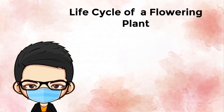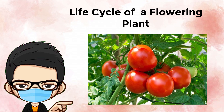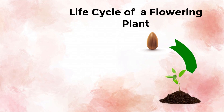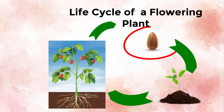Plants also have a life cycle. Plants are classified into flowering and non-flowering plants based on their life cycle. Flowering plants such as tomato plants reproduce from seeds. They have three stages in their life cycle: starting with seeds, then a young plant, then an adult plant. Take a look at the pictures.